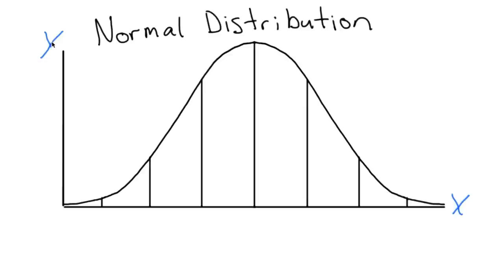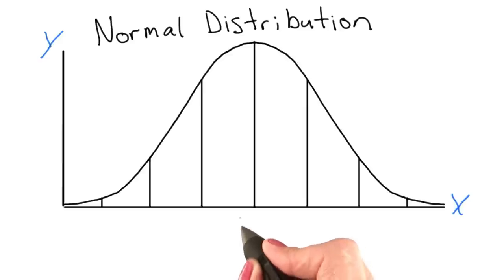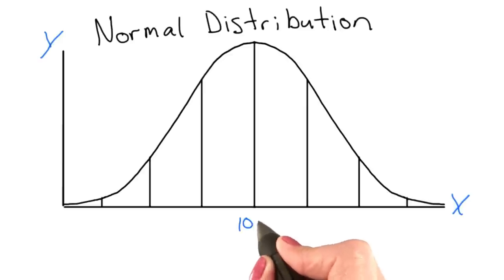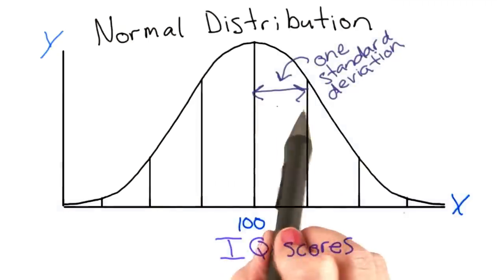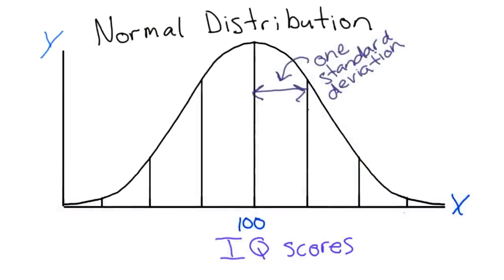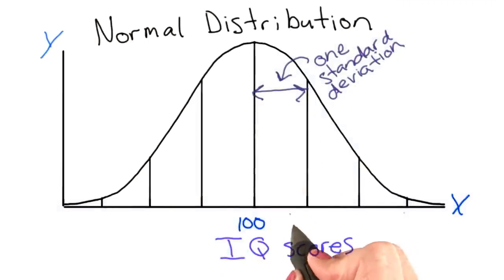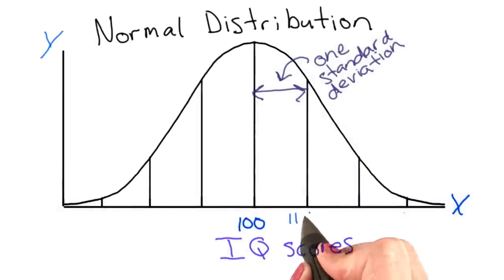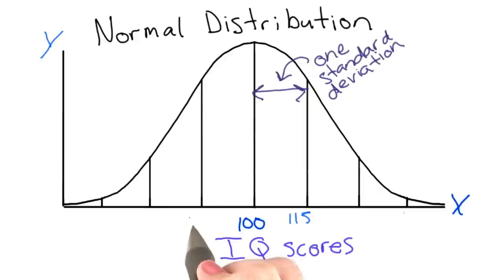It might help to visualize with something like an IQ. Here, the mean IQ is 100. Now we're going to look at deviations. Here we have one standard deviation. For our IQ, one standard deviation above the mean would be 115.